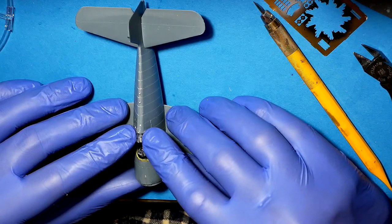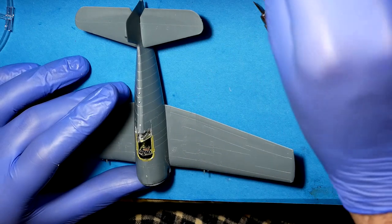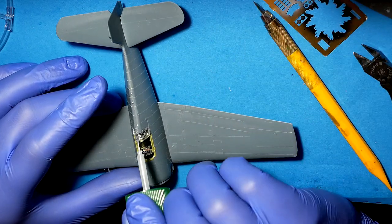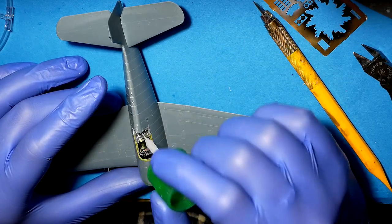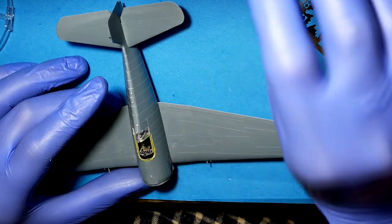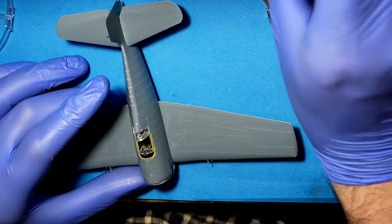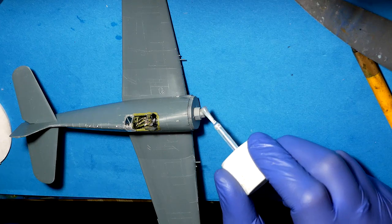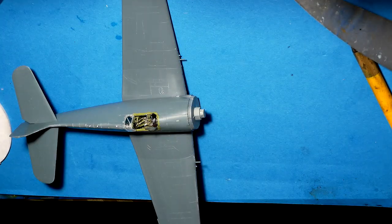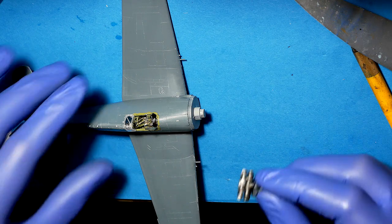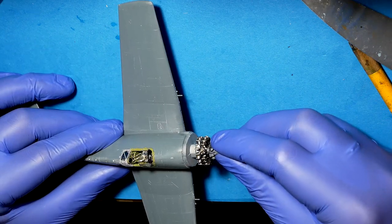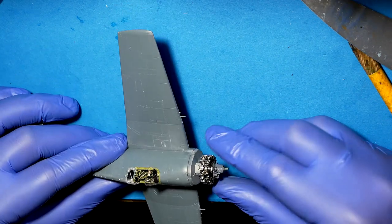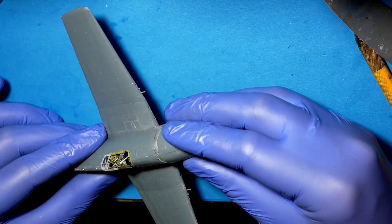I glued both parts together and also use CA glue as putty. Then I glued engine and cover of it.